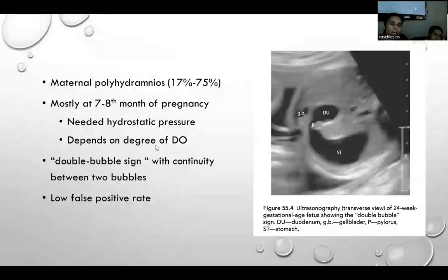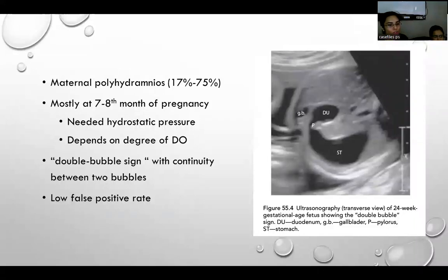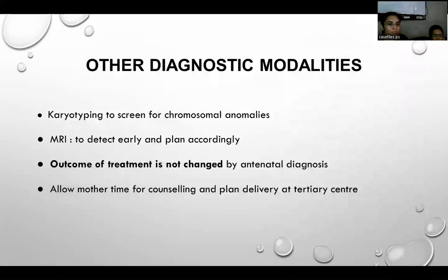In prenatal diagnosis, antenatal USG shows maternal polyhydramnios in 17 to 75% of cases. The double bubble sign with continuity between the two bubbles is seen, mostly in the later stages of pregnancy — usually at 7 to 8 months — and depends on the degree of duodenal obstruction. Antenatal USG has low false positive values in duodenal atresia. Karyotyping can be done to screen for chromosomal anomalies.